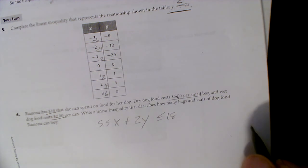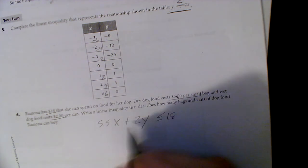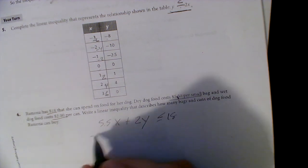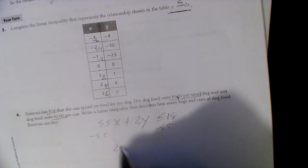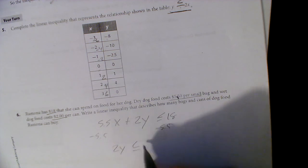Describe how many bags and cans of dog food that she can buy. Well, this is right, but let's go ahead and solve for y. If I subtract 5.5, subtract 5.5, I get 2y is less than or equal to...